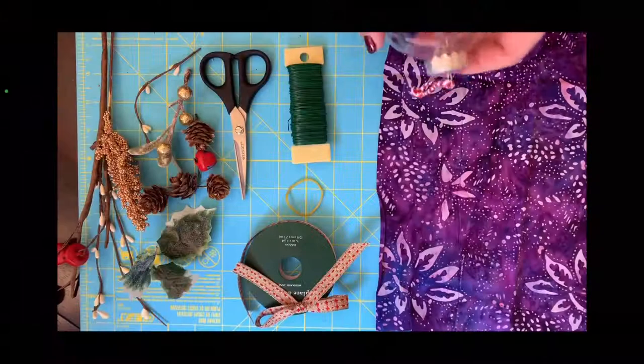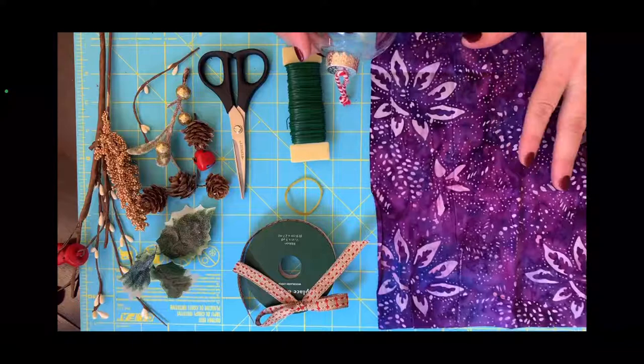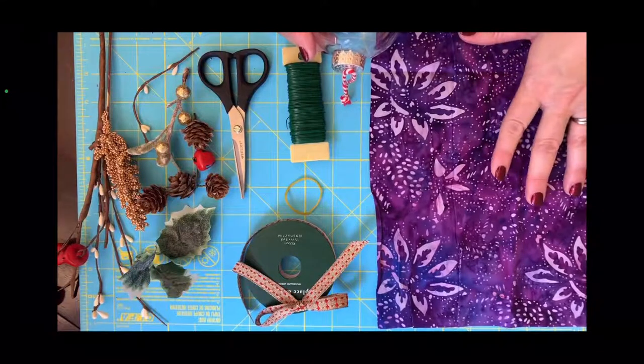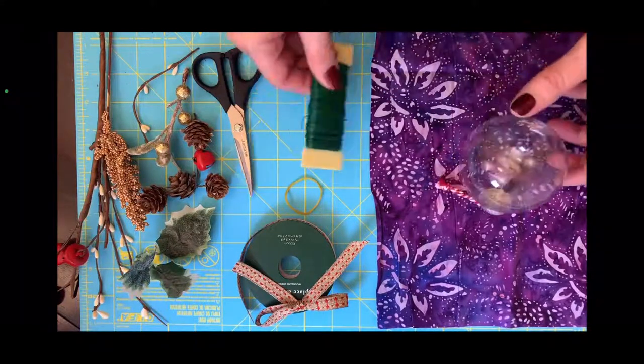So let's go ahead and get started. I'm going to show you all the materials that we need to make this project. You're going to need an 11 by 11 cut piece of batik fabric and then you're going to need some wire.